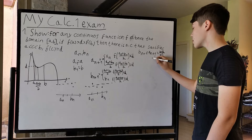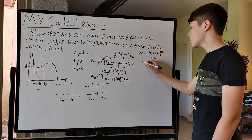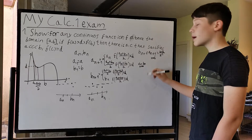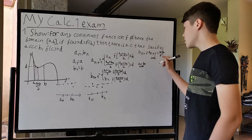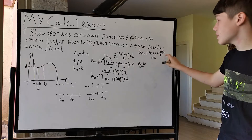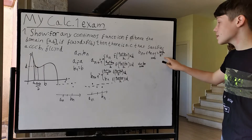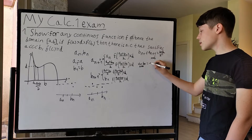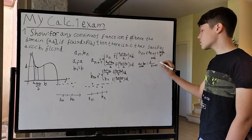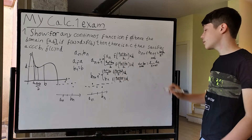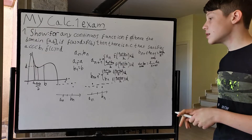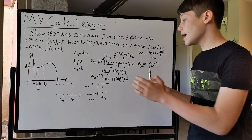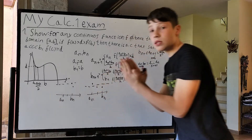So as n goes to infinity, the limit of b_n minus the limit of a_n equals the limit of (b - a)/2^n, but this goes to 0. Meaning the limit of b_n equals the limit of a_n as n goes to infinity, which basically tells us that after doing this infinitely, a_n and b_n will close in on one single value.